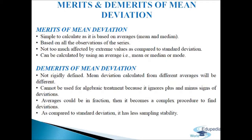The last merit: it can be calculated using any average — mean, median, or mode. Demerits: First, it is not rigidly defined, as deviation can be taken from any measure of central tendency, so mean deviation differs by average used. Second, it cannot be used for algebraic treatment because it ignores plus and minus signs. Third, if the average is in fraction, finding deviations becomes complex. Fourth, it has less sampling stability compared to standard deviation.